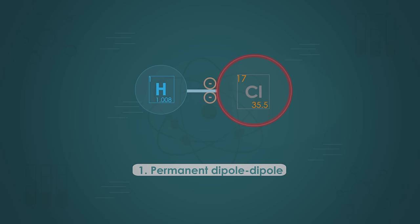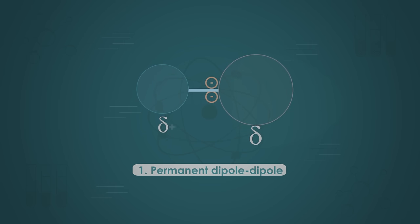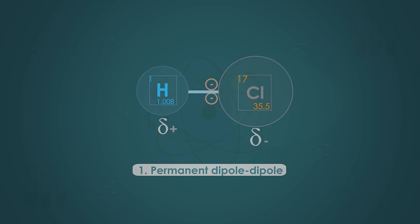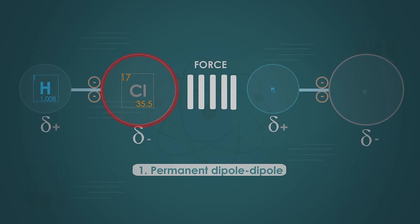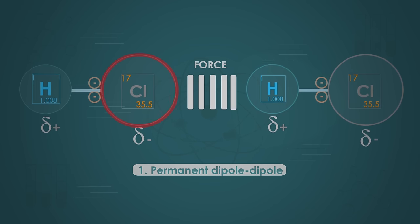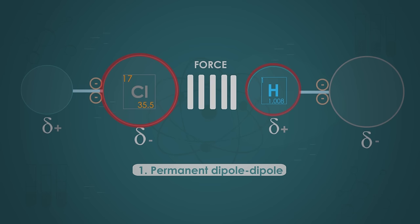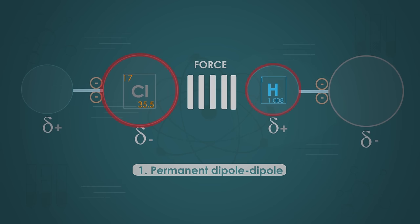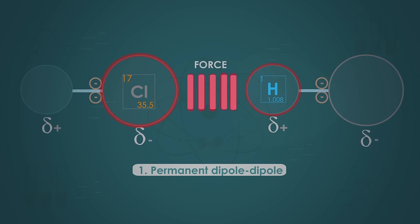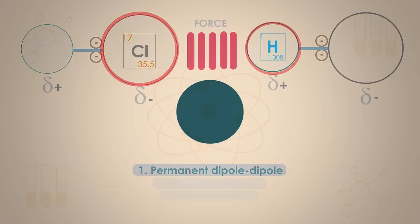We can represent the hydrogen chloride molecule as H δ+ and Cl δ−. Thus, there will be an attraction between the δ− on the chlorine atom of one molecule and the δ+ on the hydrogen atom of a neighbouring molecule. The diagram below shows the permanent dipole-dipole force between the two molecules of hydrogen chloride, indicated by the red dashed line.